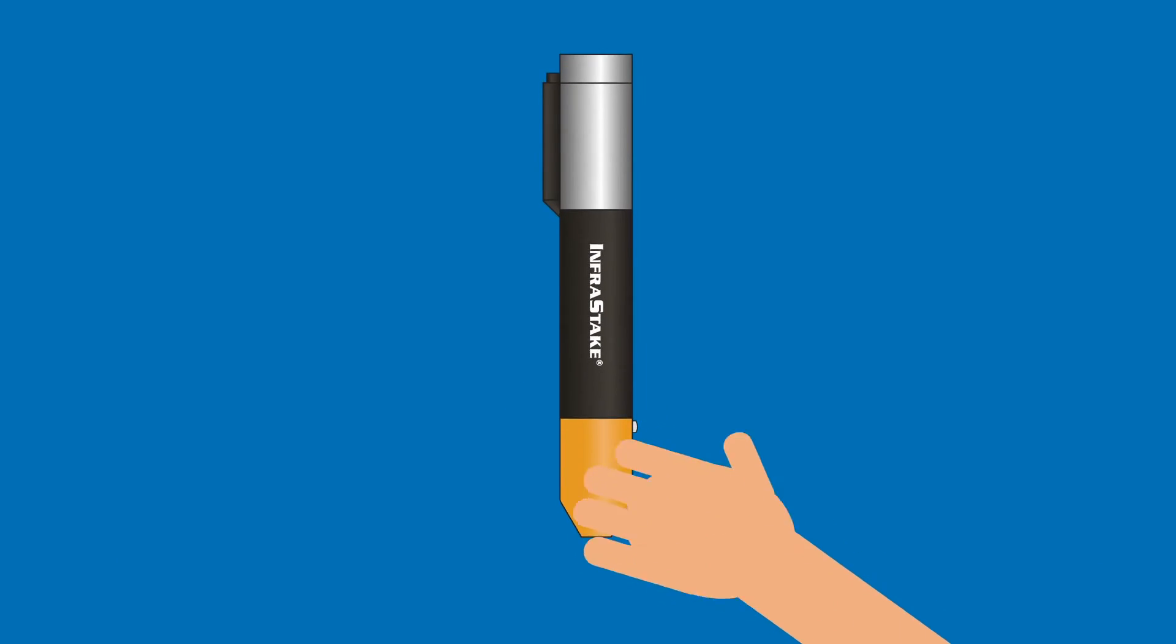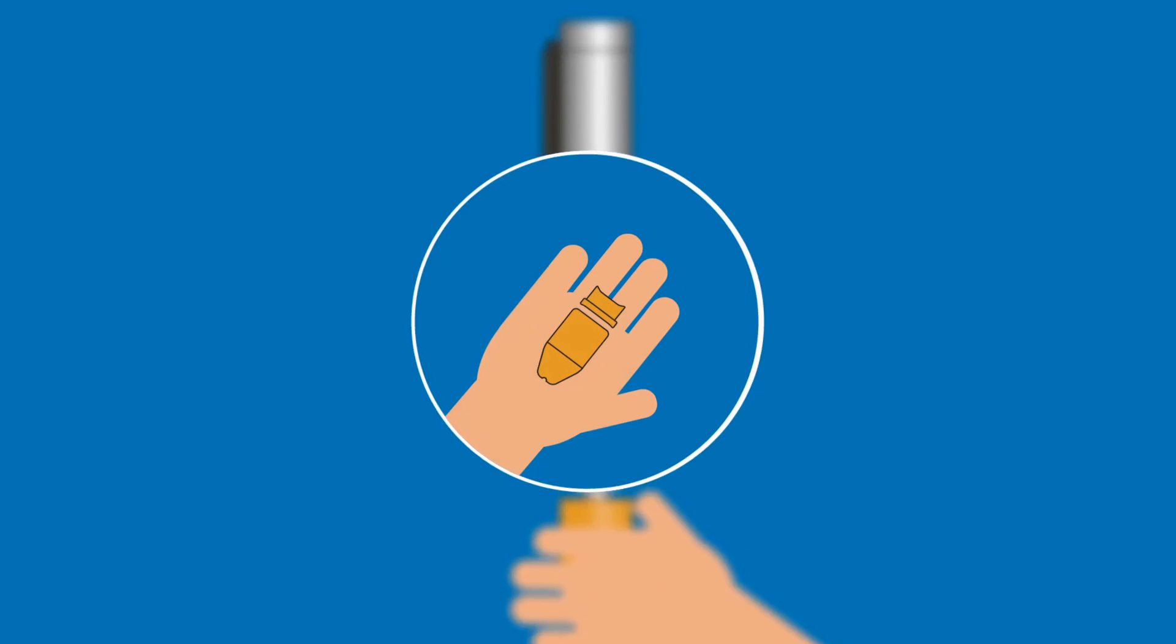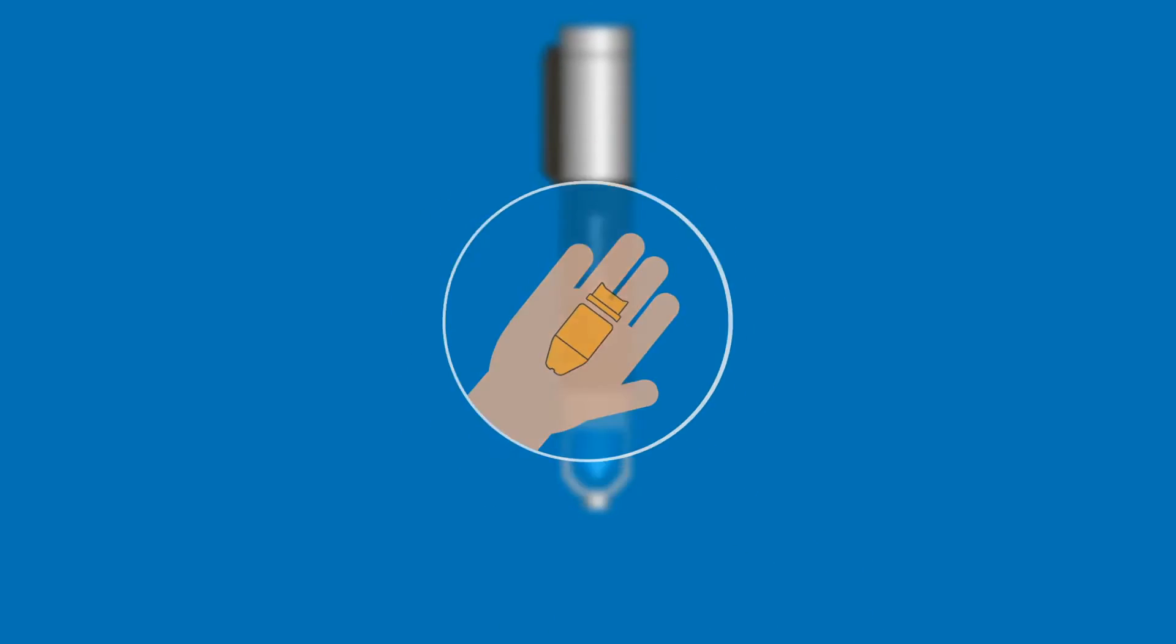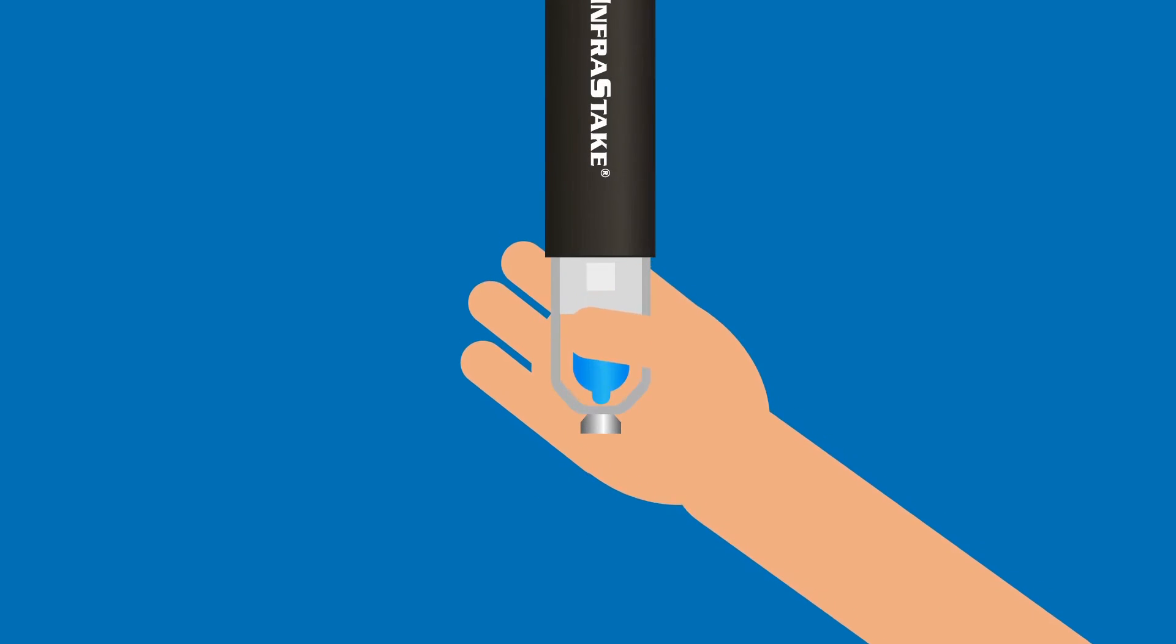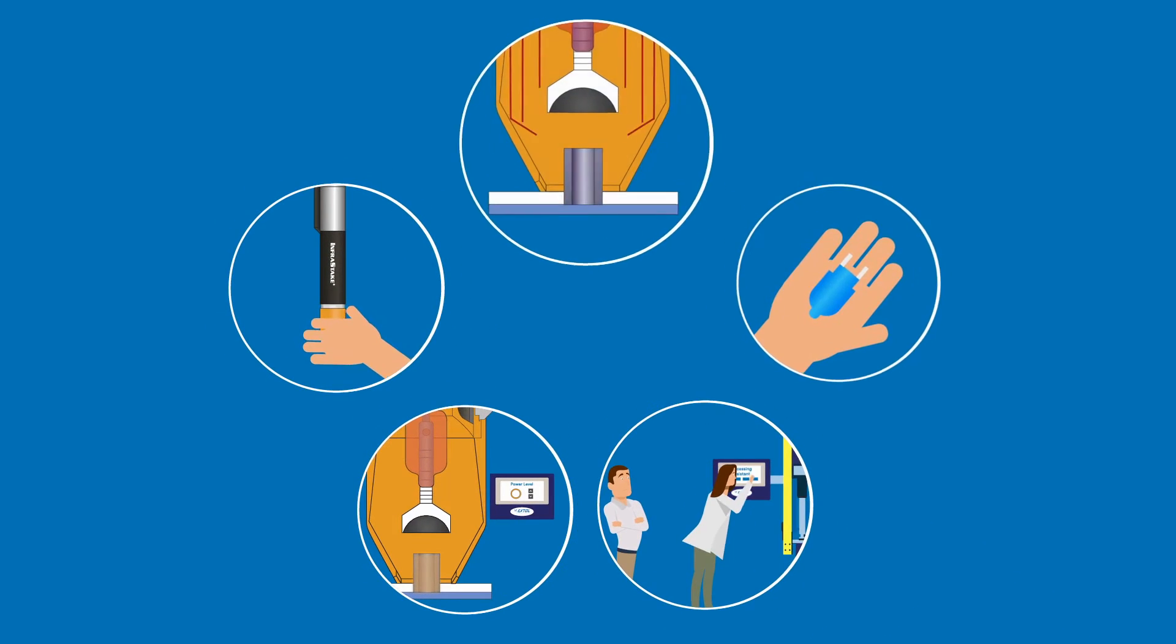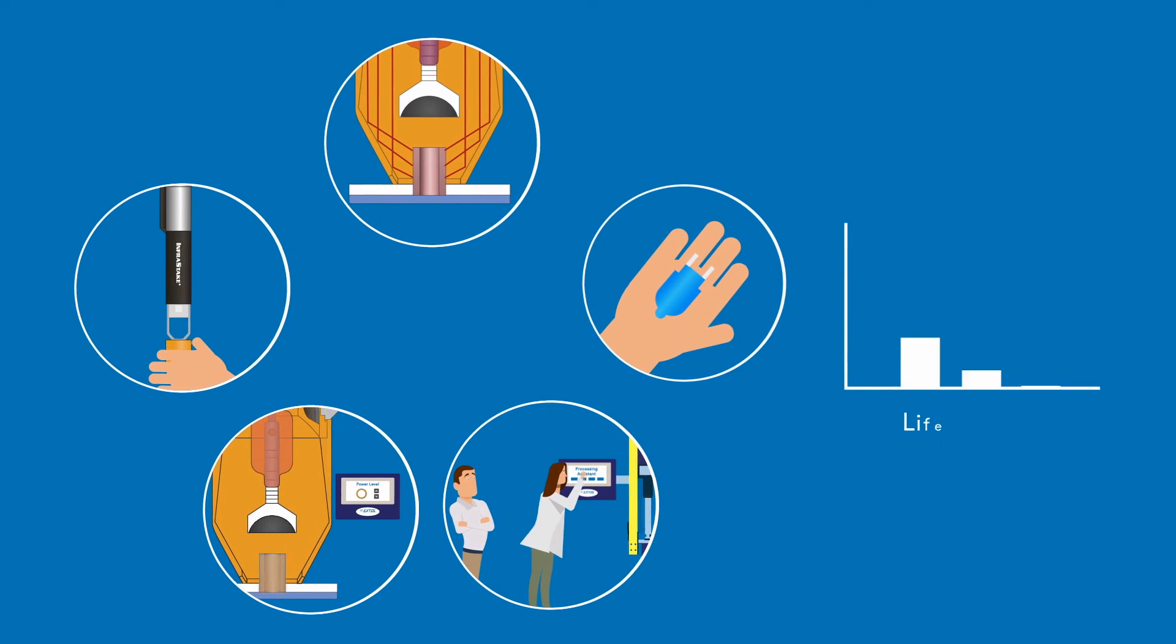When reflective surfaces do need cleaning, they are easy to remove without any tools. When the lamp is at the end of its life, it can be replaced without removing the lamp holder. All of these changes and more work together to reduce maintenance and lower the lifetime cost of operating the Infrastake technology.